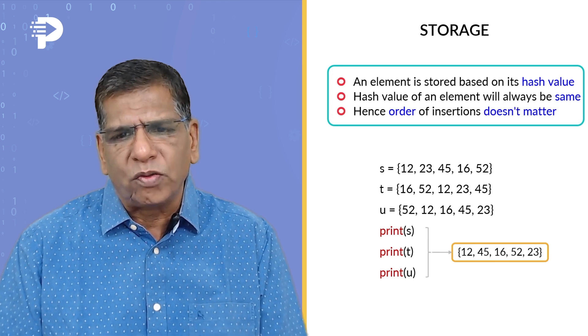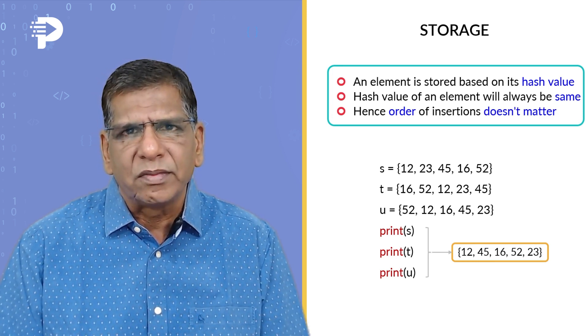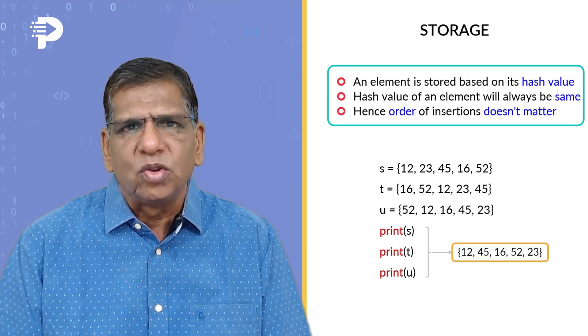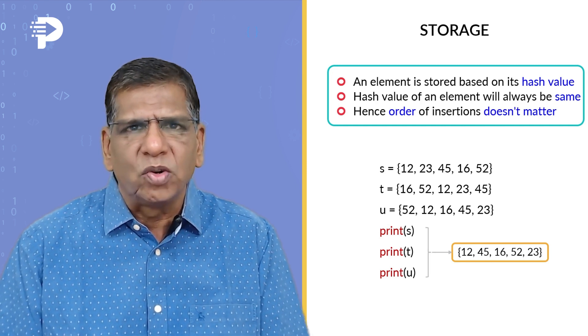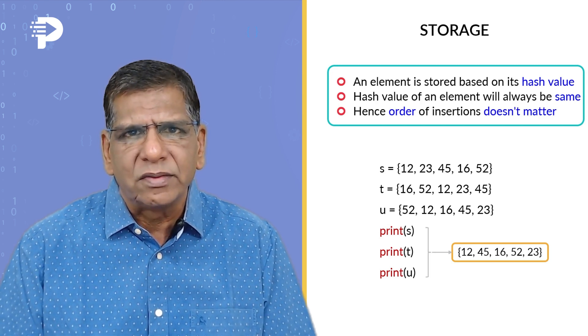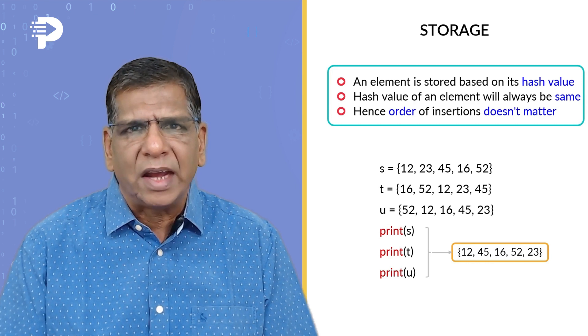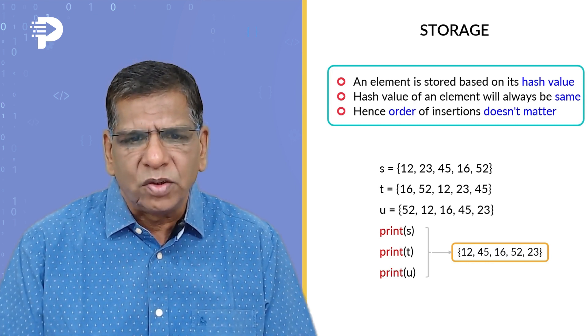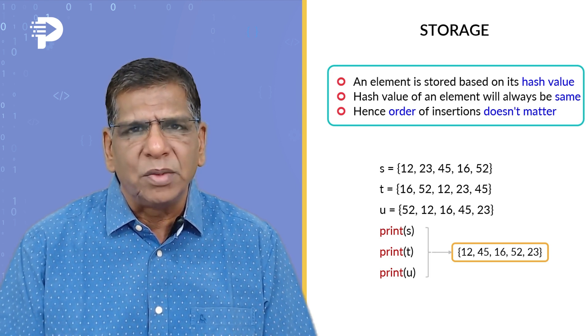So all three would print out 12, 45, 16, 52, and 23. Since it is a hash value-based storage, no matter at what point in time you calculate the hash value, it's going to turn out to be same. That is why insertion order doesn't matter. You insert in any order, so long as the values are same, they would be accessed in exactly the same order. So if you do print s, t, and u, you are bound to get exactly the same result.